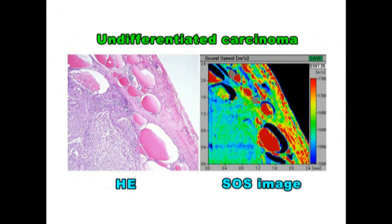This is undifferentiated carcinoma. An undifferentiated carcinoma consisting of spindle cells invades into the surrounding thyroid follicles. Some colloids surrounding the carcinomas are broken down into small pieces. The carcinoma portions are green-blue in color. The compressed follicles have condensed colloids with greater speed of sound.